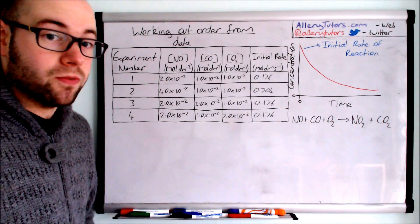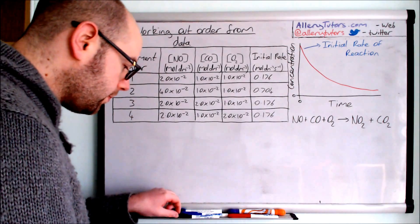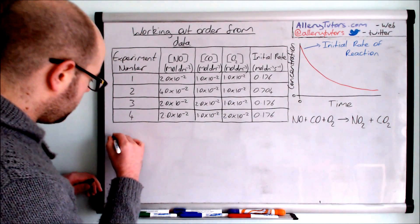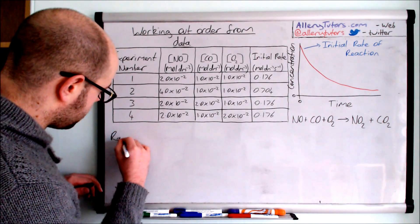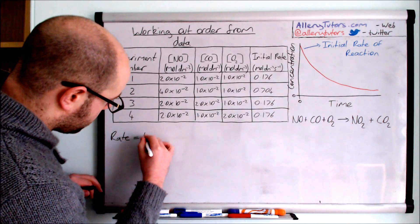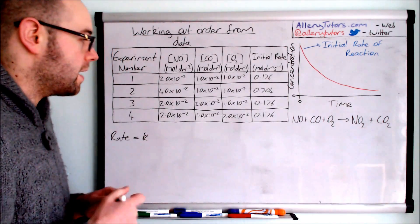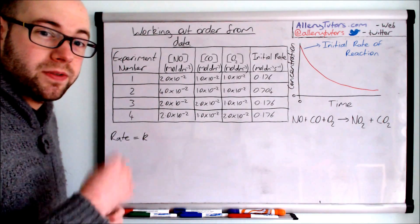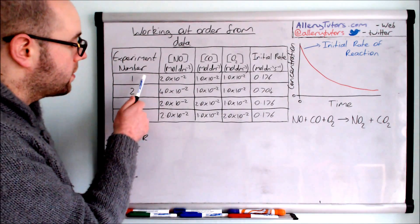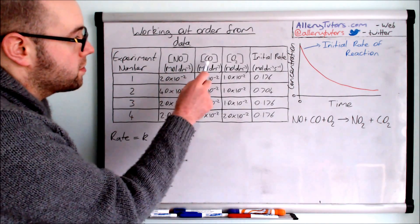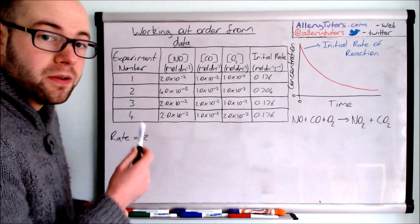We're going to start and write down our rate expression. Rate when we write it down, we're going to put rate equals k and we're looking for in respect to the reagents the order. If we look here we've got NO, CO and O2. So we'll start with NO first.